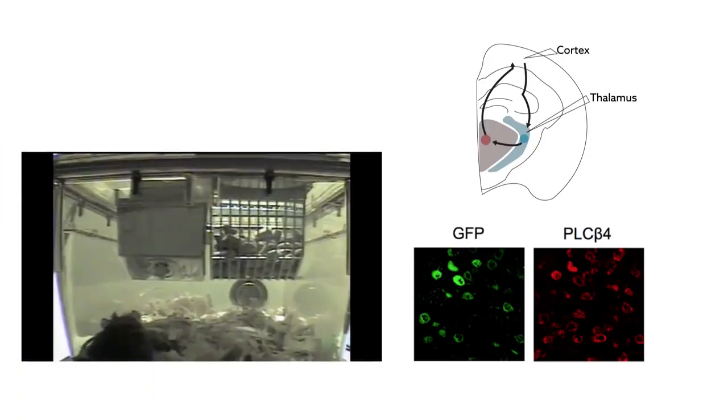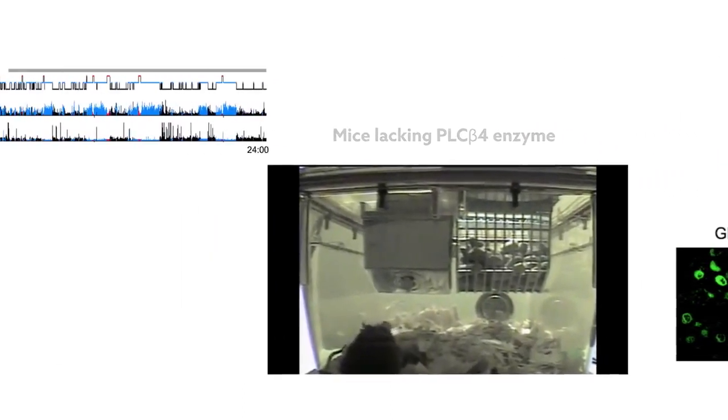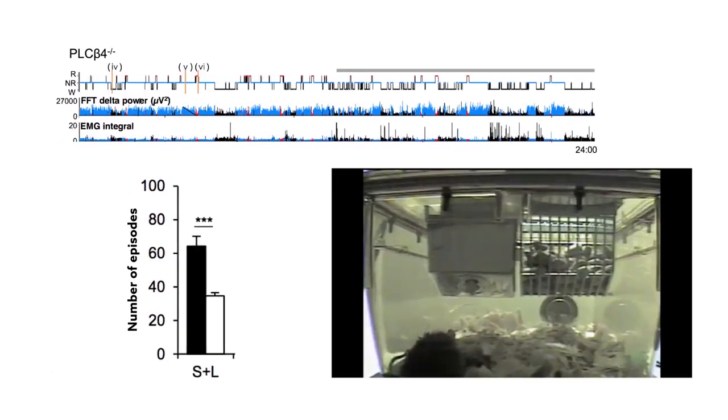To figure out how this particular pathway influences sleep, researchers used mutant mice lacking the enzyme. When the team evaluated the sleep patterns of the animals, they found that the mutant mice spent more time in non-REM sleep and had fewer REM episodes.